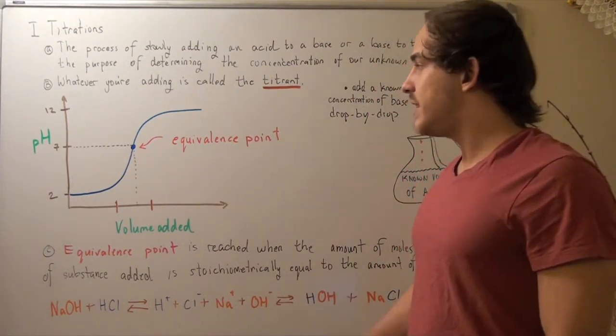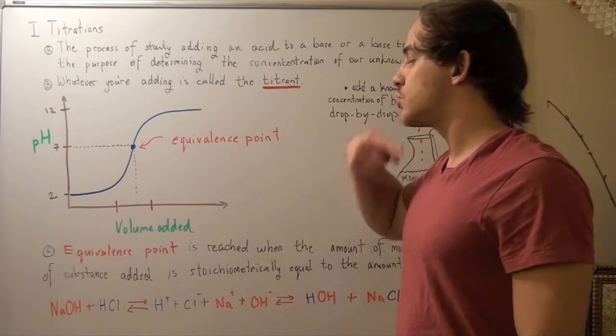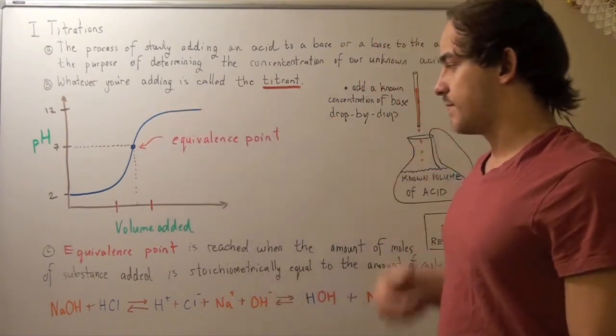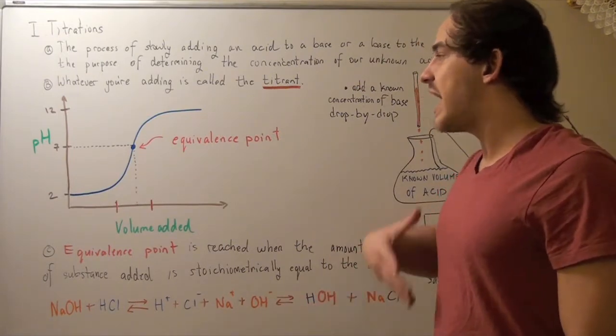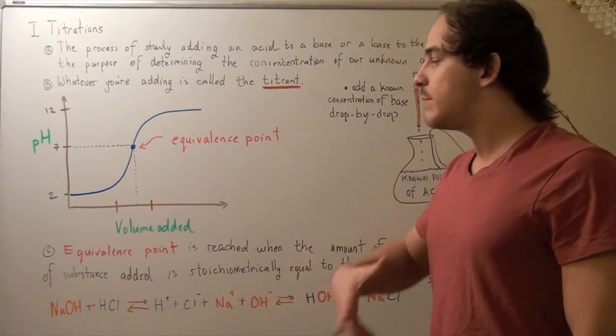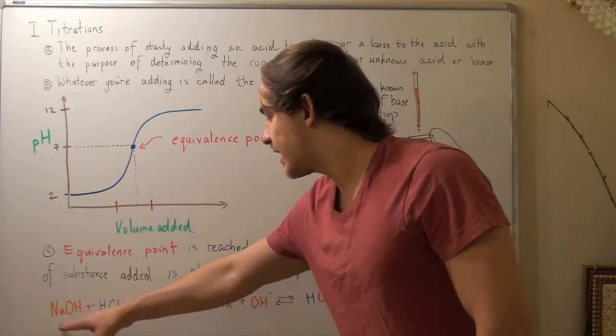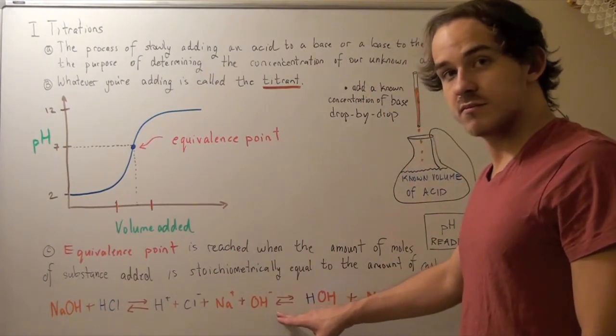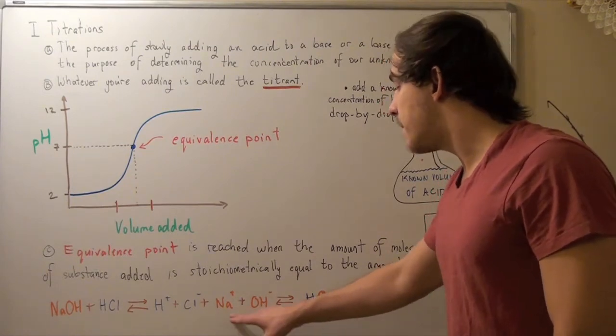If we begin to add more of our sodium hydroxide, our solution becomes basic. That's because all the acid has been neutralized. By adding more, we simply increase the concentration of OH-. And so, our solution will become basic.